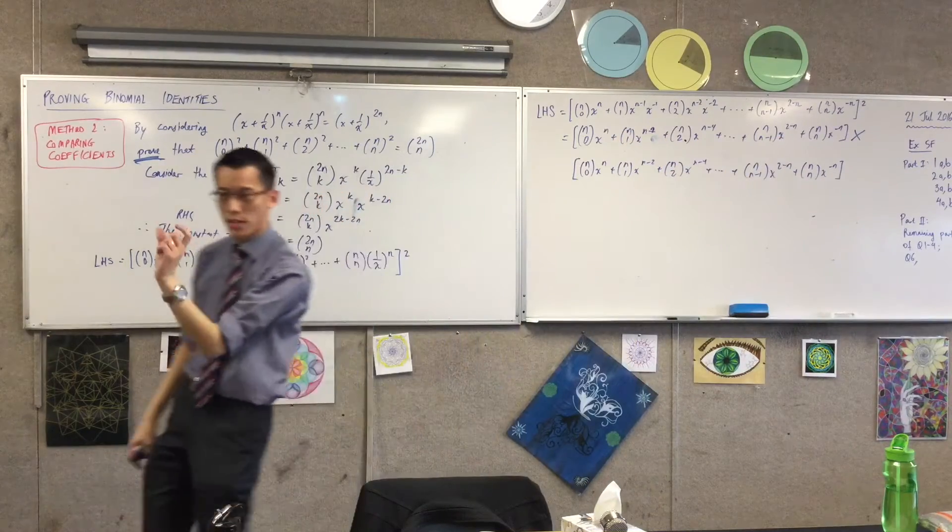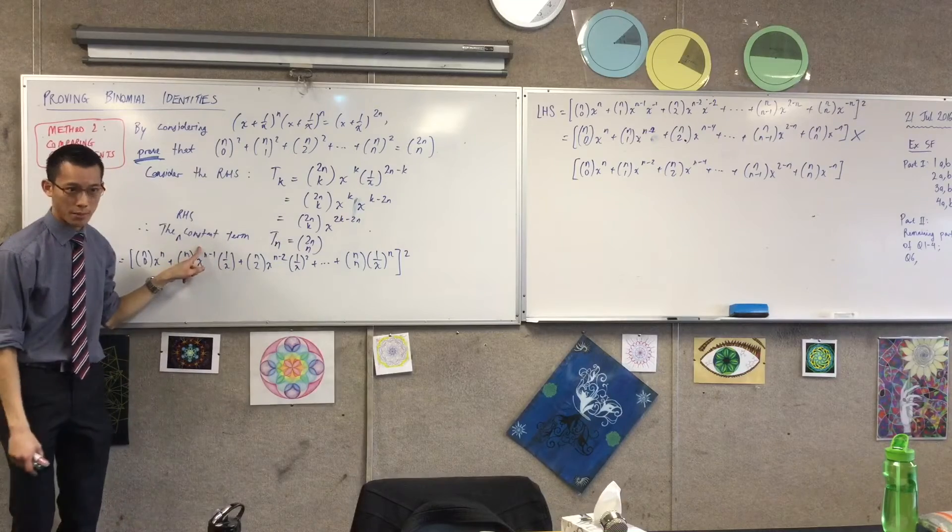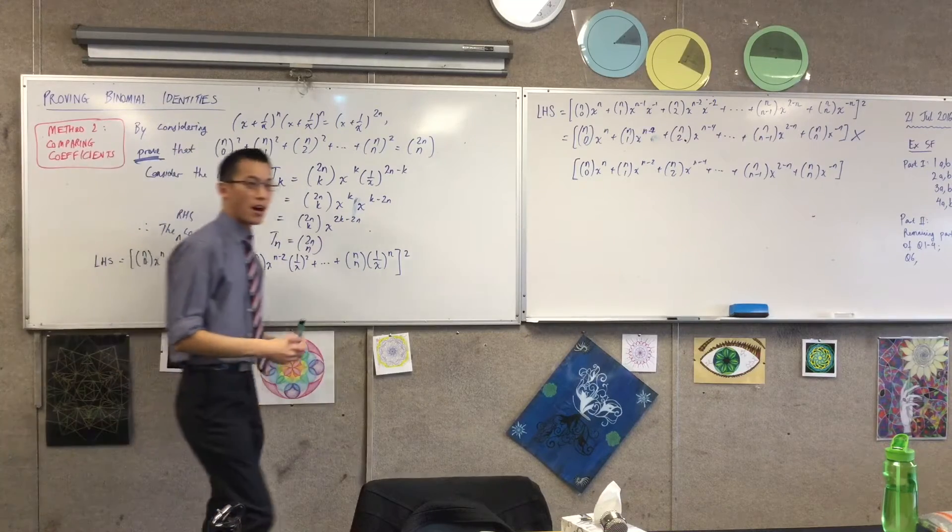There are very particular ones of those pairings that are going to give you constant terms. Someone want to call out a pairing that you can see?